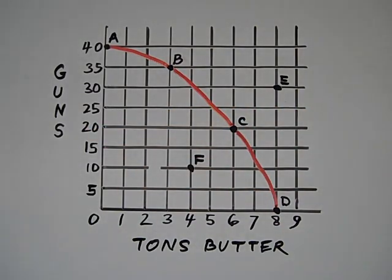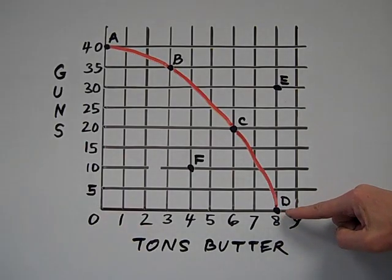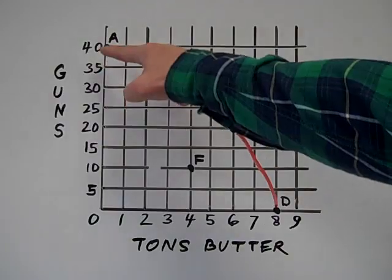And the last one, what's the opportunity cost to go from D to A? Press pause. And the answer is, you're giving up eight tons of butter, because at point D you were producing eight tons, and now you're going to be producing zero. What are you gaining? Well, you're gaining a lot of guns. You're going from zero guns all the way up to 40.